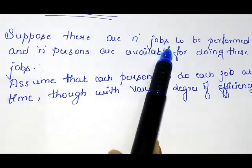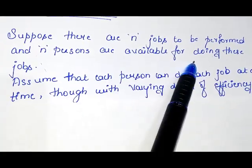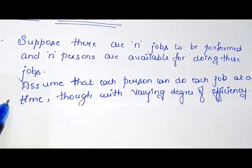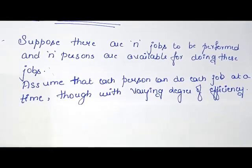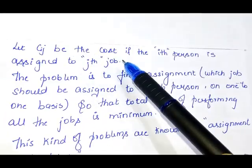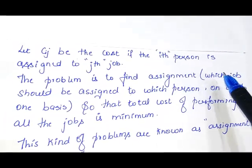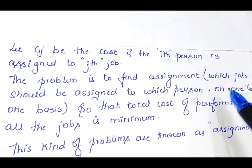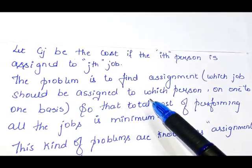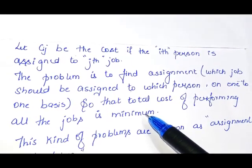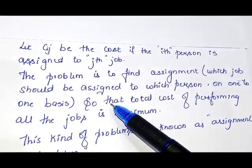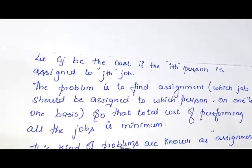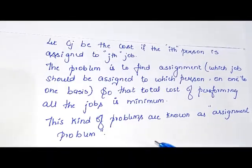Suppose there are N jobs to be performed and N persons are available for doing these jobs. Assume that each person can do each job at a time, though with varying degree of efficiency. Let Cij be the cost if the i-th person is assigned to the j-th job. The problem is to find which job should be assigned to which person on a one-to-one basis, so that the total cost of performing all the jobs is minimum. These kinds of problems are known as assignment problems.